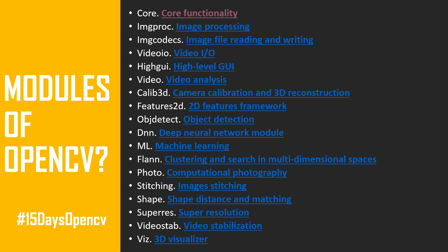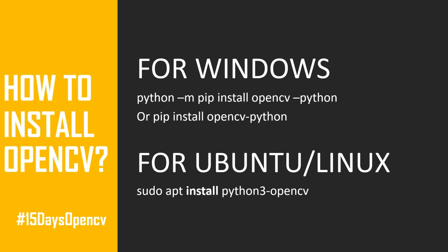The 'superres' module is for super resolution — similar to how GANs like StyleGAN can regenerate or upscale images. OpenCV provides this module to work with super resolution. The 'videostab' module is for video stabilization, and is easy to use. Finally, 'viz' is important for visualizing data in 3D mode rather than 2D mode.